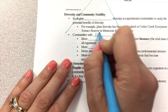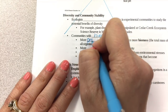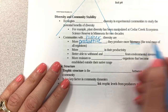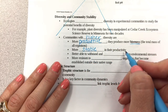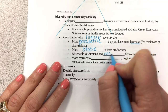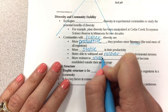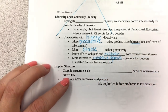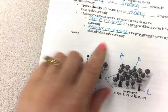Communities with higher diversity are more productive — they produce more biomass, which is the total mass of all living organisms. They're more stable in their productivity, better able to withstand and recover from environmental stresses, and more resistant to invasive species — organisms that become established outside of their native range. So it's beneficial to have a more diverse community in both species richness and relative abundance.